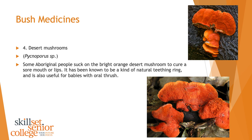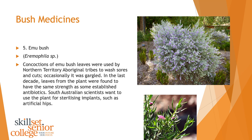Number four is a bit of a strange one — the bright orange desert mushroom. Some Aboriginal people suck on this to cure a sore mouth or lips. It's been used as a kind of natural teething ring and is also useful for babies with oral thrush and oral infections of the mouth. I don't know who the first person was to put that in their mouth, but it has been proven to help with those ailments.